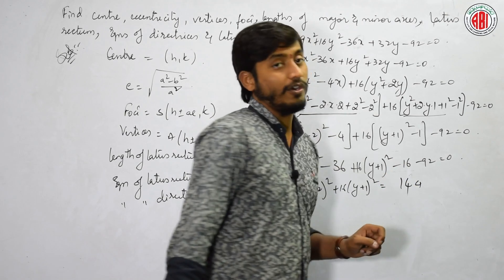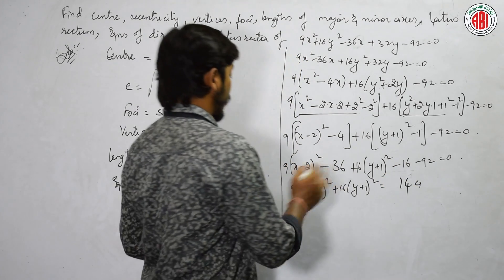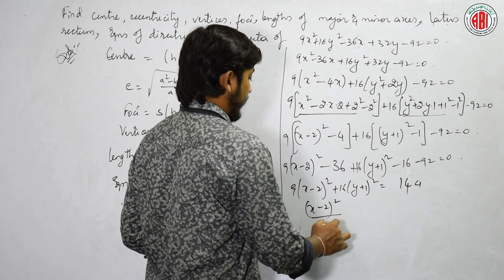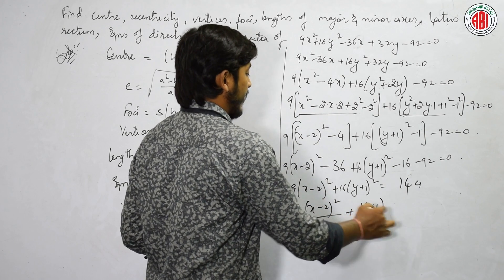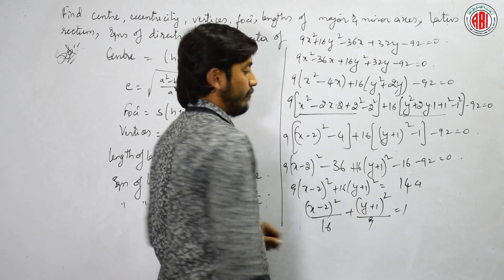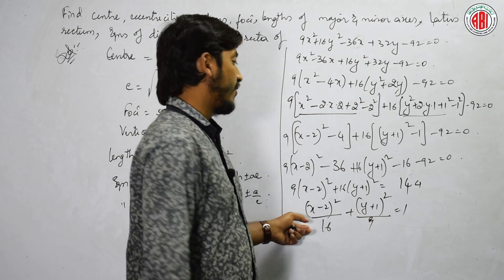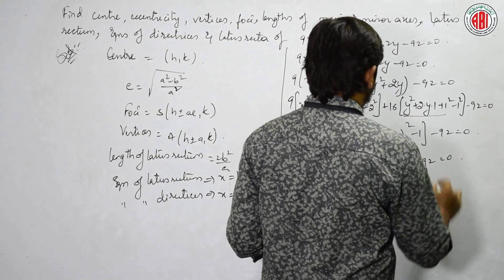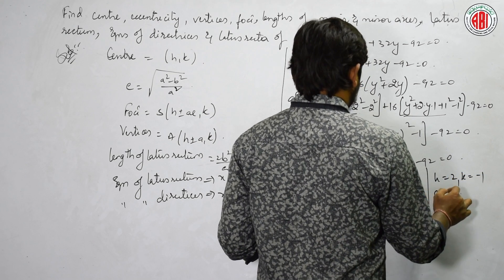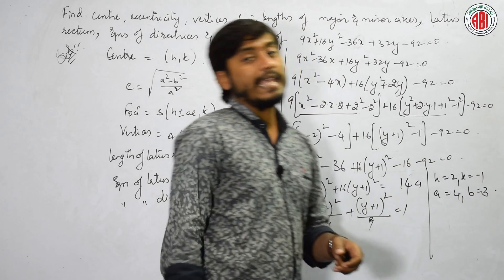Adding everything on the right-hand side gives 144. Dividing both sides by 144, we get (x−2)²/16 + (y+1)²/9 = 1. Comparing with the standard form, h = 2, k = −1, a = 4, b = 3.